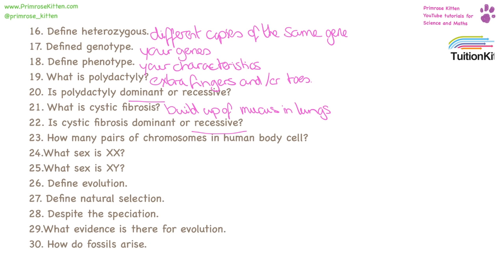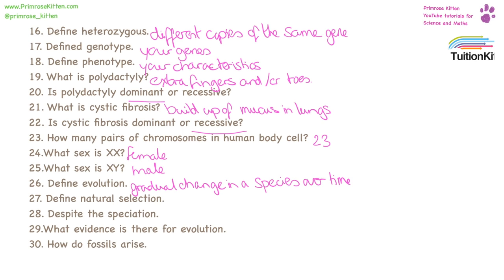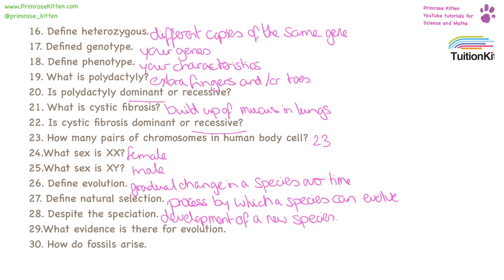In a human body cell there are 23 pairs of chromosomes. XX is female and XY is male. Evolution is where species gradually change over time, and natural selection is the process by which species evolve. Speciation is the development of a new species. Evidence from evolution comes from the fossil record.